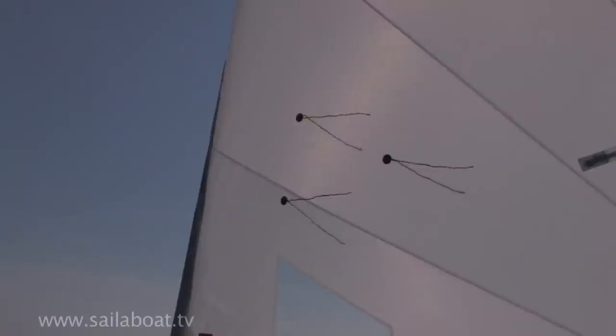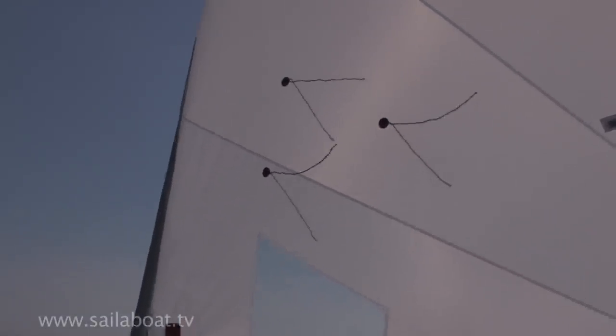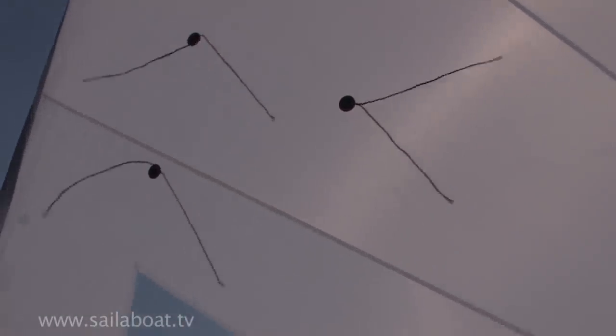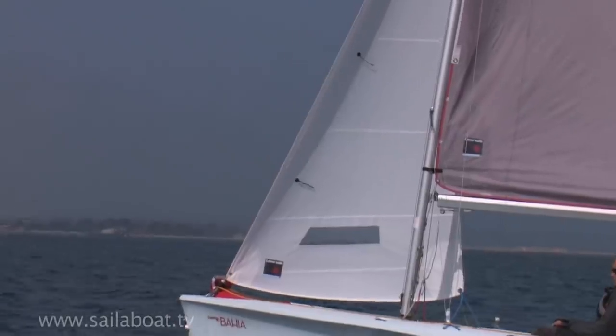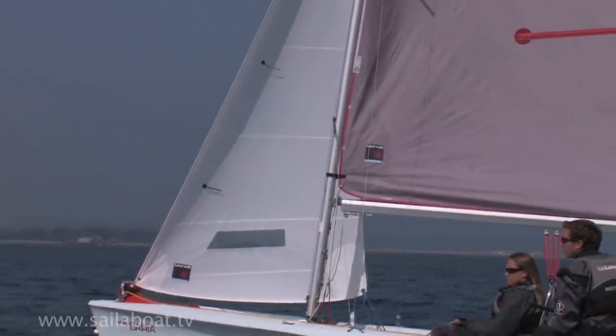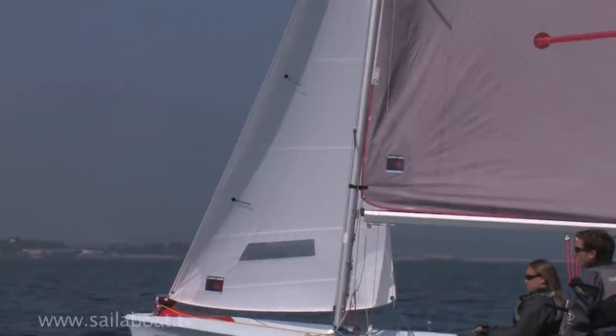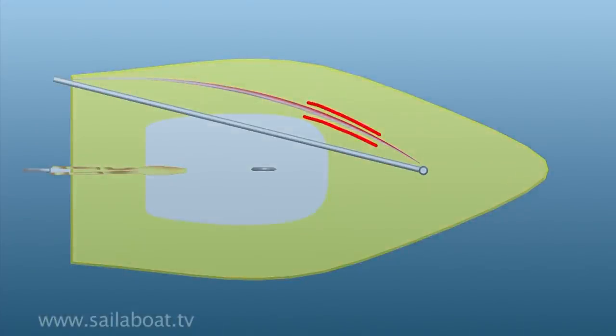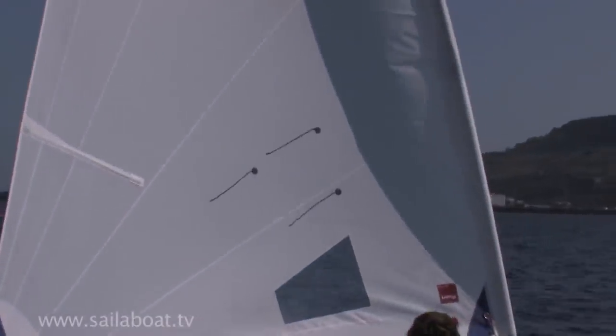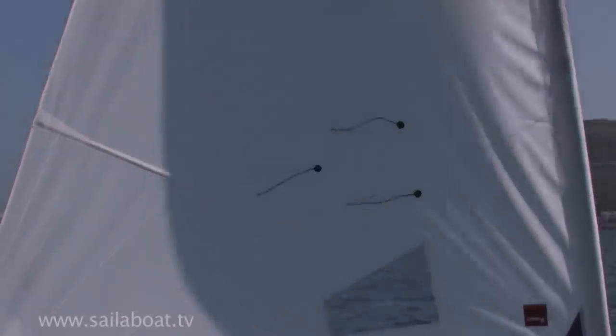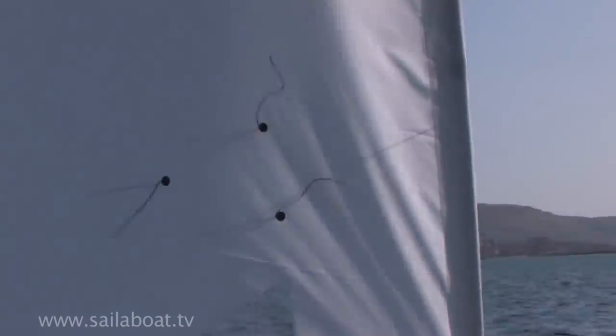To help you here, you might have telltales. These are small strips normally made of wool and stuck to both sides of the sail, normally about six inches inside the front edge. You should aim to keep the telltales streaming evenly on both sides of the sail, like this. As you enter the no-go zone, the telltale on your side of the sail will lift, like this.